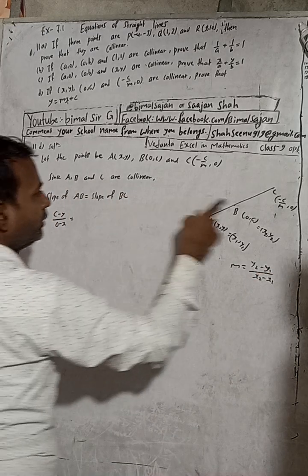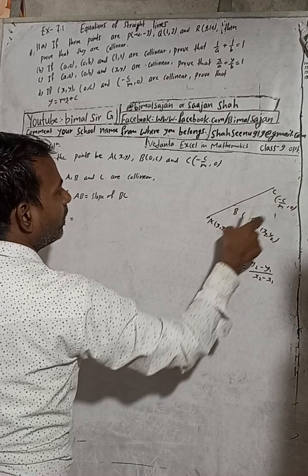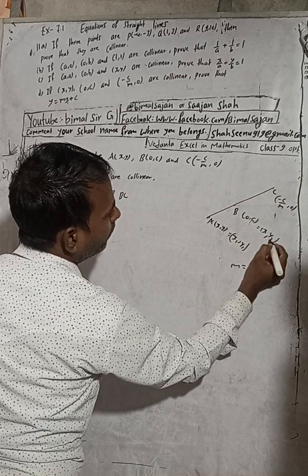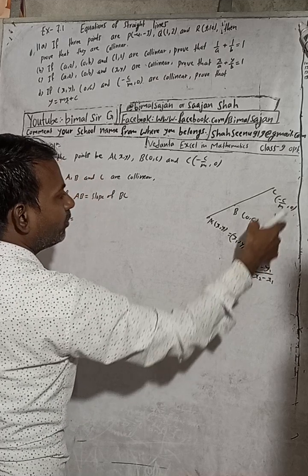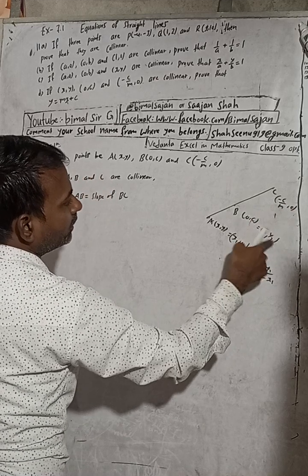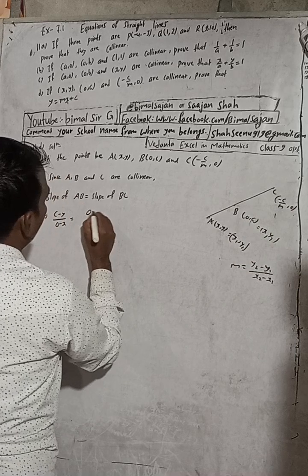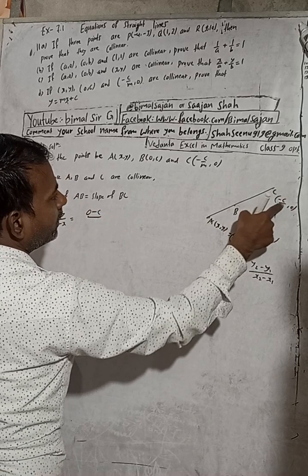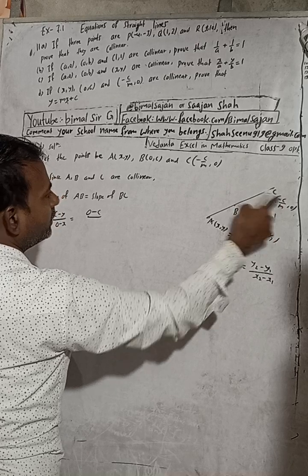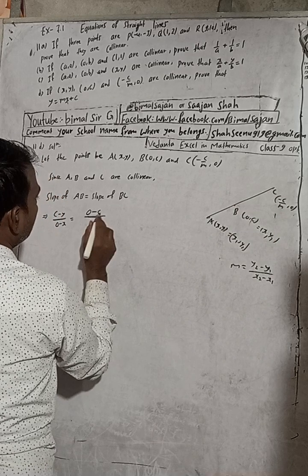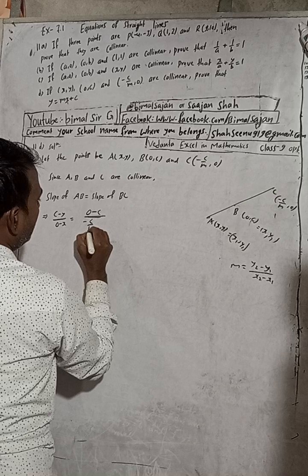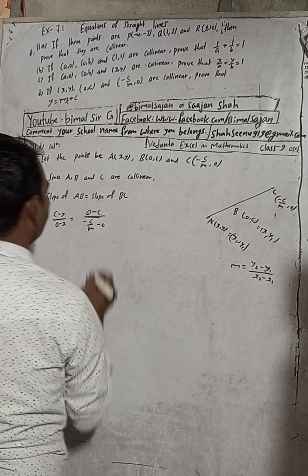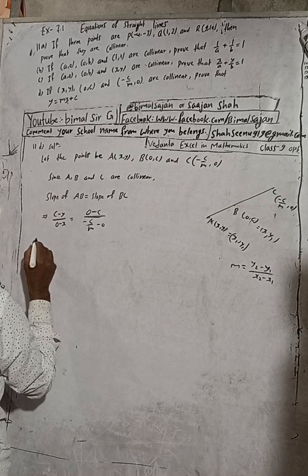In the same way, the slope of BC: taking B as (x₁, y₁) which is (0, c) and C as (x₂, y₂) which is (-c/m, 0). So slope BC = (0 - c)/(-c/m - 0).